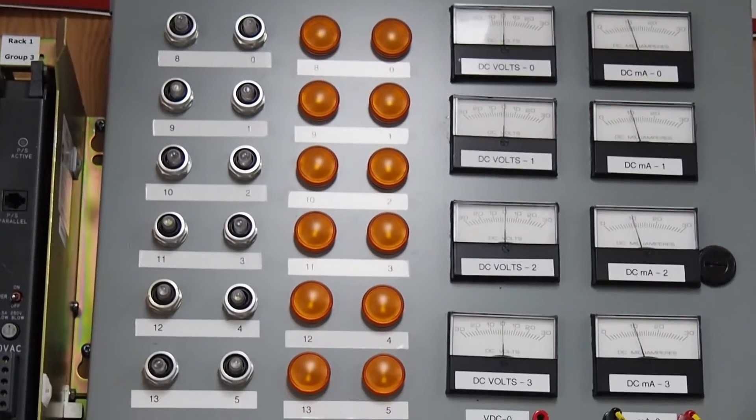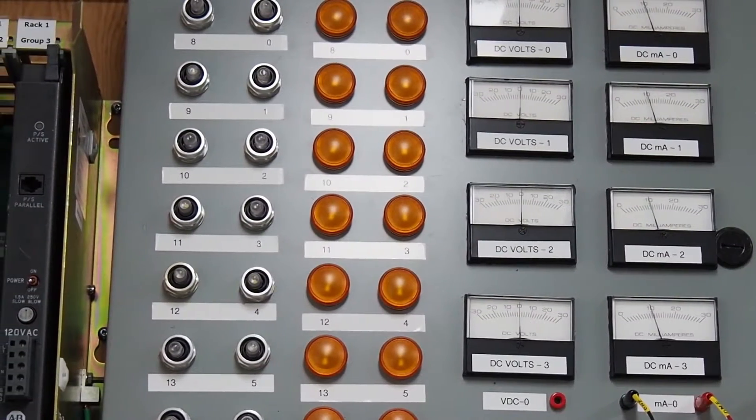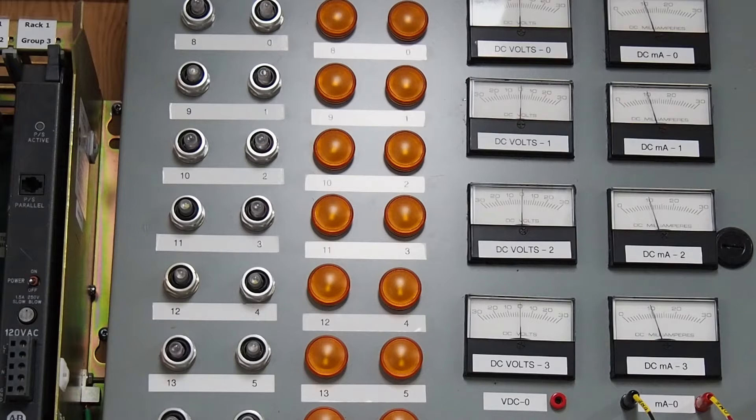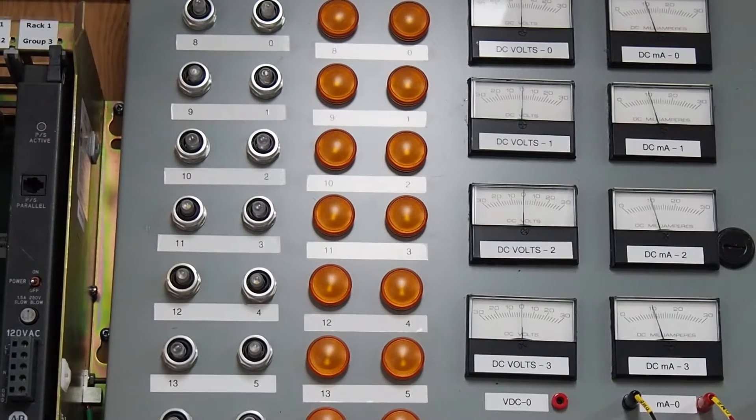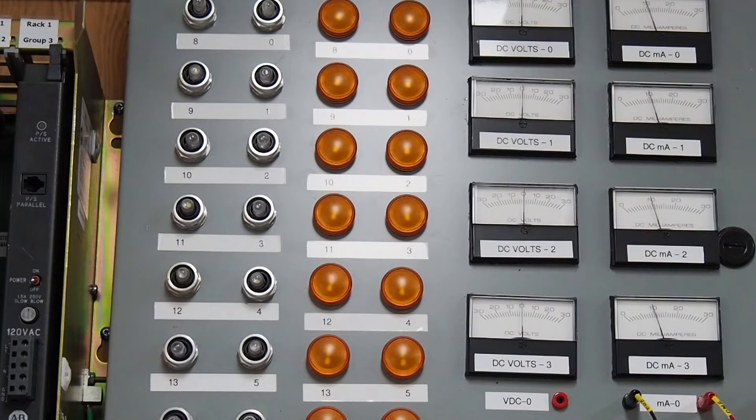Now the whole idea of this particular test is to be able to see if all four of them track the same, because you're putting the same value into the output module and you want to read the input module to see, make sure that you're getting the same value back. Now the same value back is a relative term in this case, because the analog output goes 0 to 32,767. The analog input being a plus minus, that 32,767 is spread over the from minus to plus. So you're only into the 18,000 or 8,000 and something, 8,500 as maximum positive, or reverse.